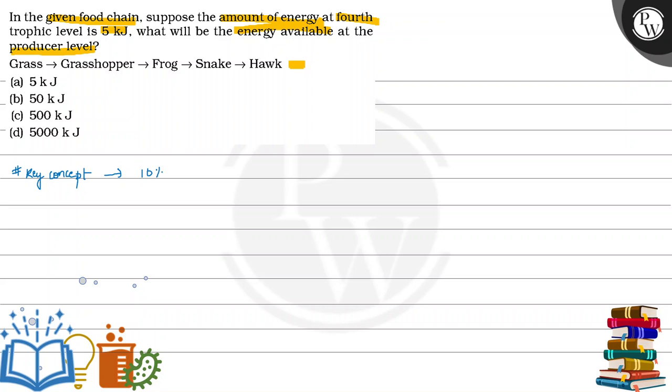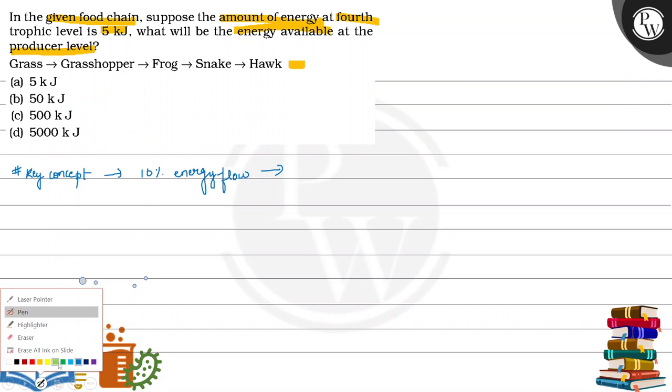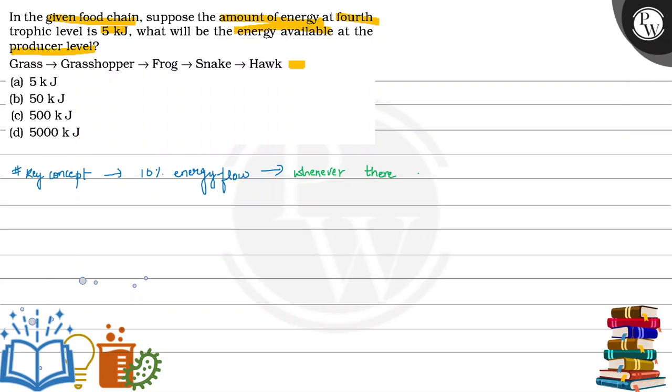So what is our key concept? 10% energy flow. This means that whenever there is a transfer of energy from one trophic level to another trophic level, only 10% of energy can flow.